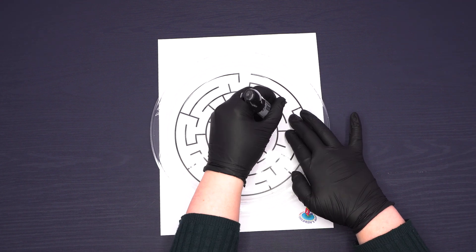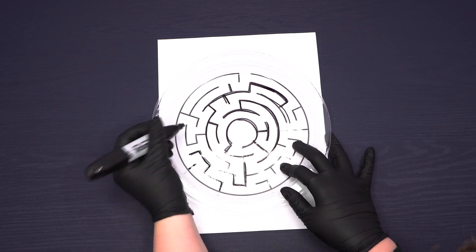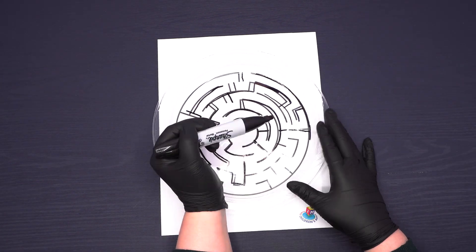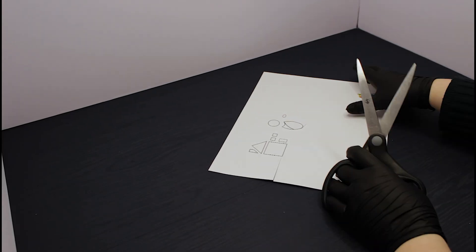Yochaved was the daughter of Levi and married Amram, her nephew. She and her daughter Miriam, referred to as Shifra and Puah in the Torah, were the head midwives for the Jewish women in Mitzrayim. Next, carefully cut out the pieces of the house and baby template.